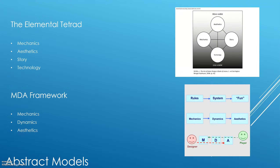We had a look in Lecture 2 at the Elemental Tetrad, which is another model for designing games, looking at the mechanics, the aesthetics, the story, and the technology. It helps you to see which elements might be weak or strong in your game and how to make sure they're all equally strong. The MDA framework looks at the mechanics, the dynamics, and the aesthetics.